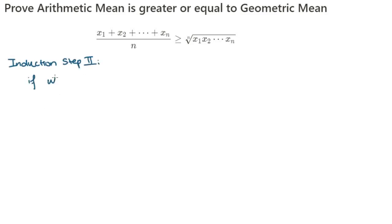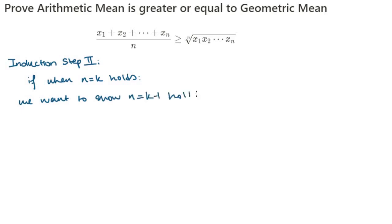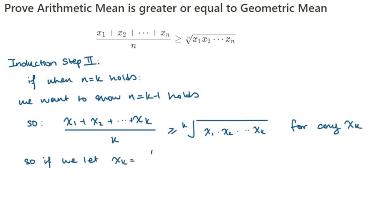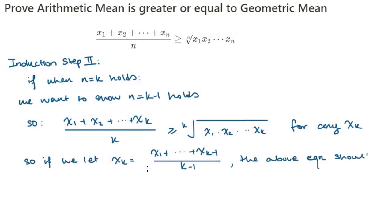Now onto the backward step. When n equals k is true, we want to show that n equals k minus 1 is also true. The assumption is that (x₁ + x₂ + ⋯ + xₖ)/k ≥ ᵏ√(x₁x₂⋯xₖ). This is true for all xₖ.